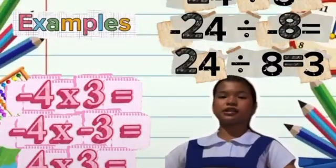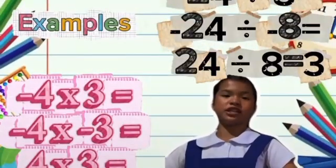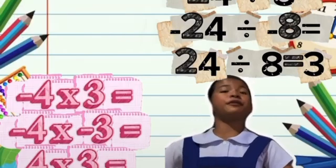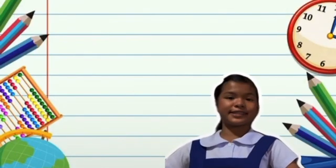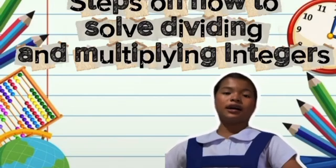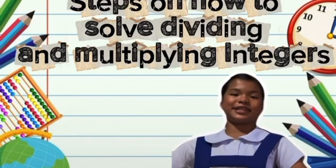Here are some examples of multiplying and dividing integers. But first, before solving the problem, let us know first the steps on how to solve dividing and multiplying integers.